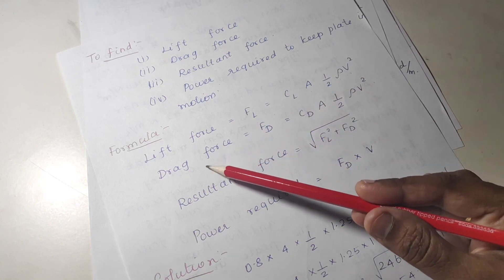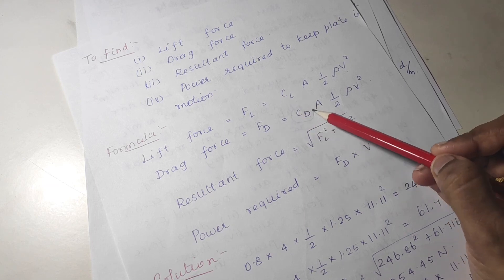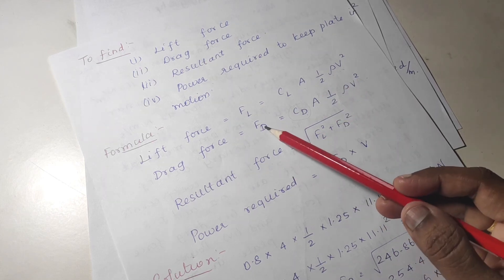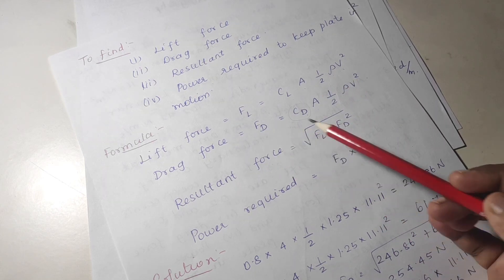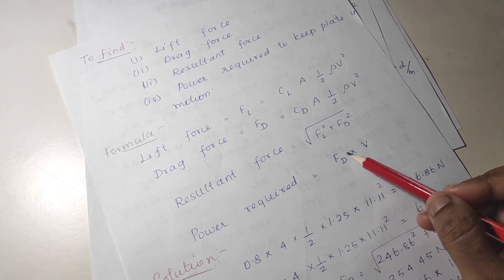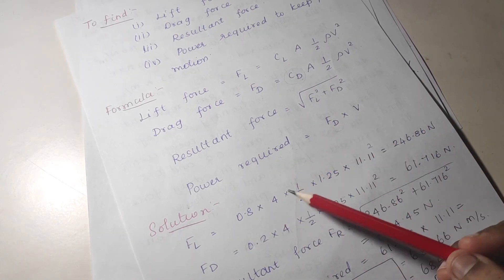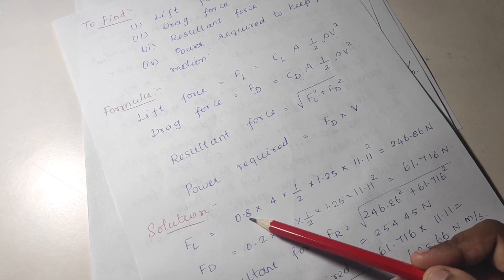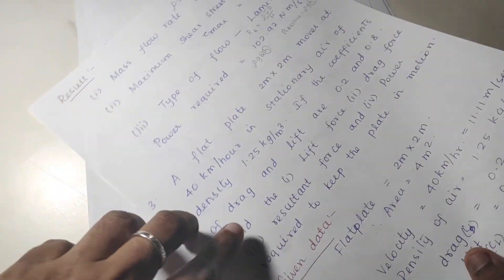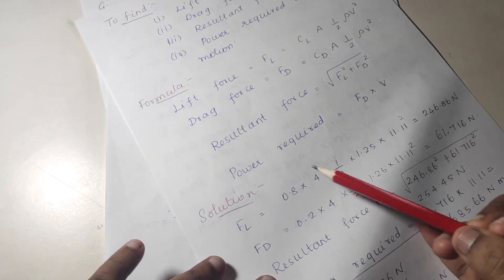For drag force, instead of CL substitute CD: FD equals CD into A into half of rho V squared. The resultant force is the square root of FL squared plus FD squared. Power required equals drag force into velocity. Substitute all values — CL and CD are given, area is 2 by 2 equals 4 meter square, density is given, and velocity must be converted from kilometers per hour to meters per second.